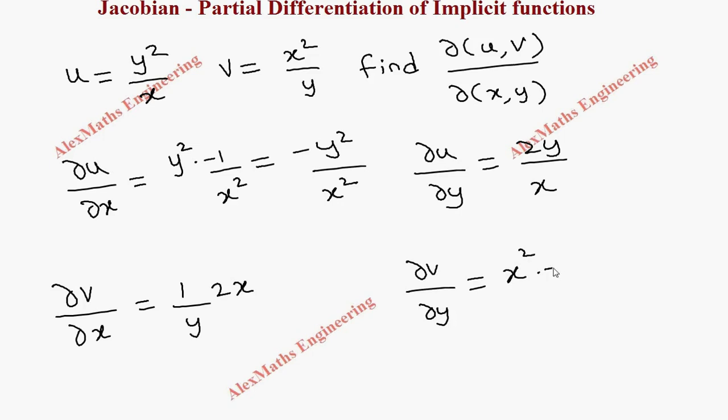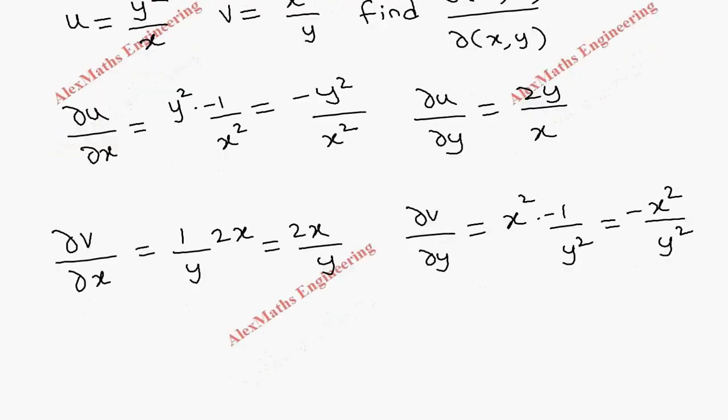Now ∂v/∂y: x² is constant and the differentiation of 1/y is -1/y², so this is -x²/y². Now we have all the partial derivatives computed.